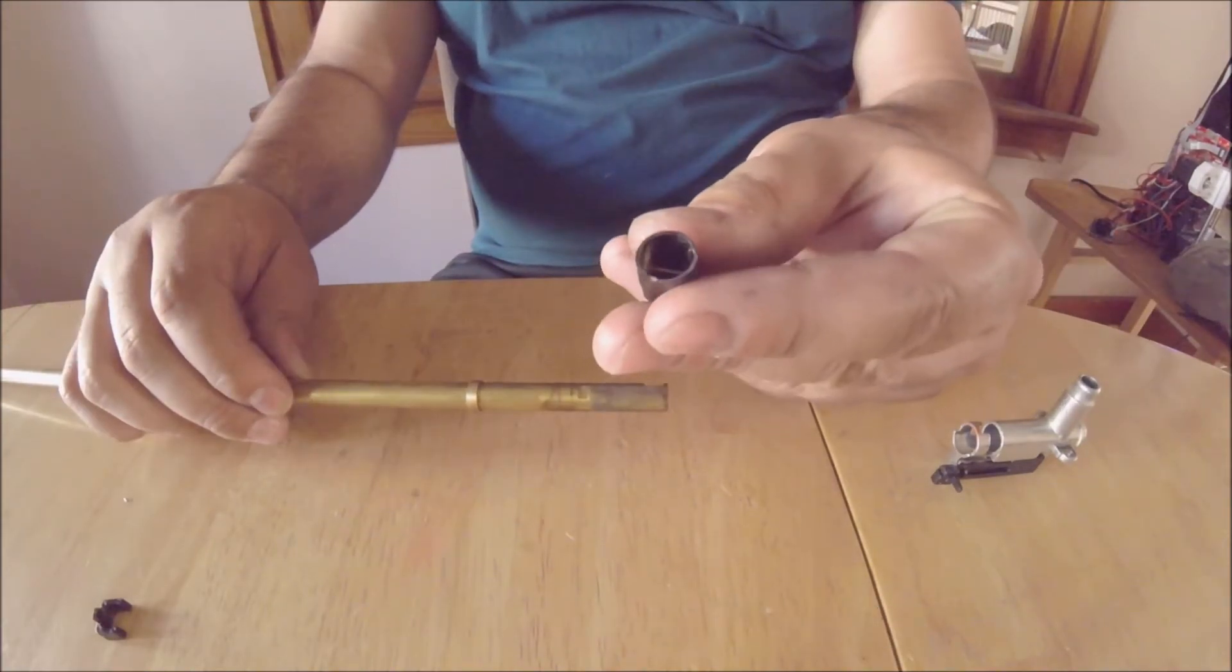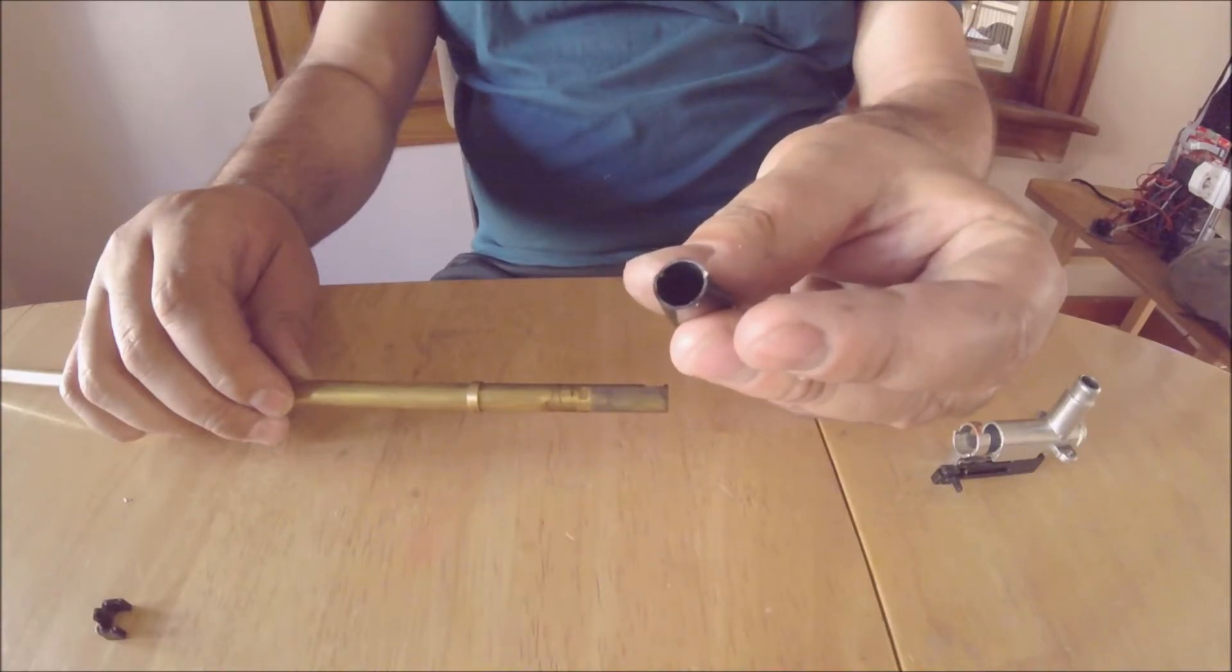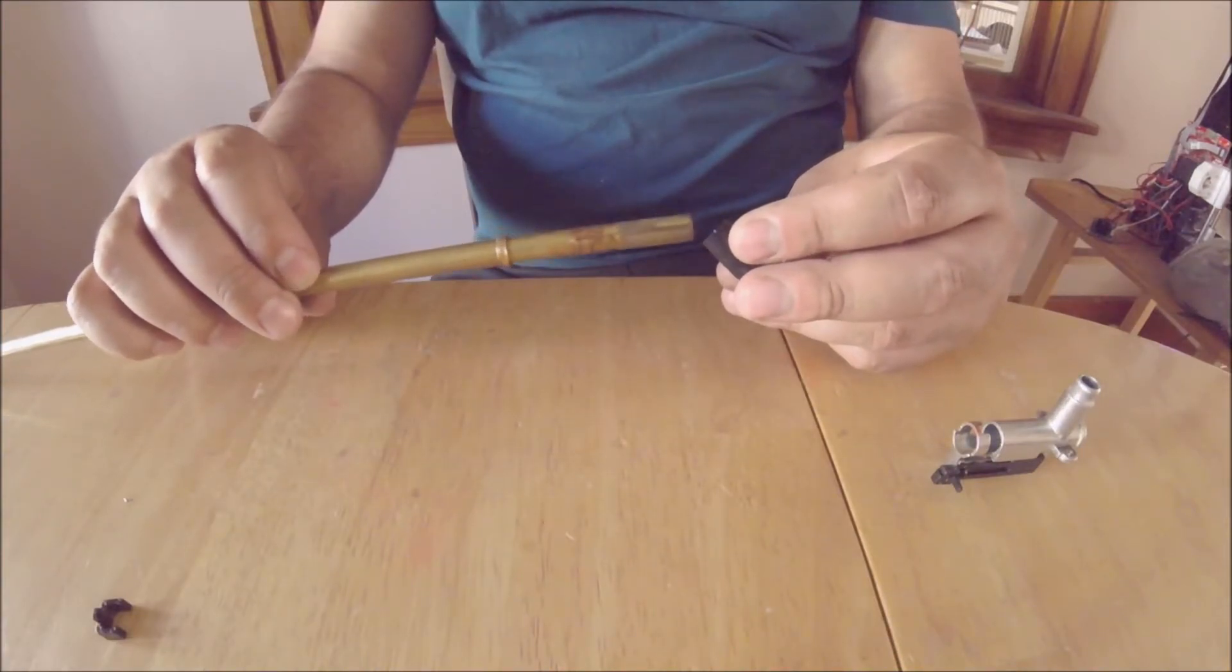Then, align the hop-up bucking on the barrel. Make sure to align the bucking on the track on the bottom of the barrel.